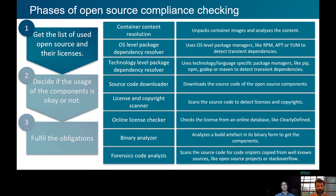We need to get the source code to run a full analysis, so we need a source code downloader which downloads, based on information gathered from these different sources, the source code of the open source components. Then there is a need to scan for copyright and license information — a tool that goes through the source code and detects licenses and copyright information. This step can be bypassed by online license checking via a database called ClearlyDefined, which is accessible to everyone online and contains license and copyright information for different open source components.